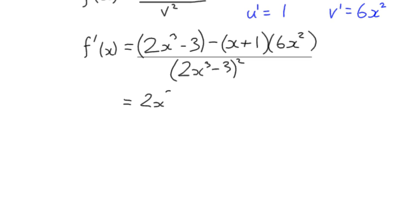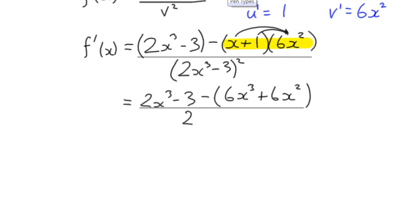So we've got 2x cubed minus 3. Minus, well, what have we got by multiplying these two terms together? We've got x multiplied by 6x squared is 6x cubed. And then we've got positive 1 multiplied by 6x squared plus 6x squared. All over 2x cubed minus 3 squared.